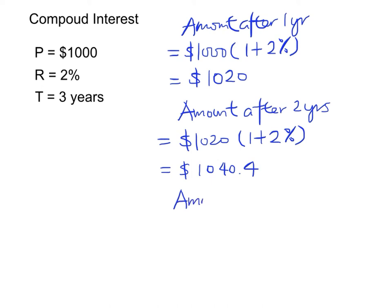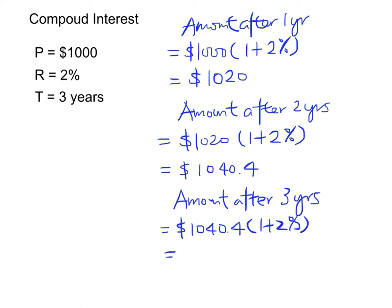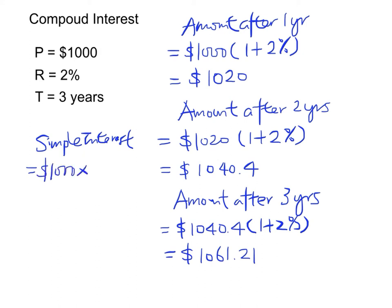Therefore, we can find the amount after three years. This will be $1,040.40 times (1 plus 2%) again, which gives $1,061.21. For compound interest, we have an interest of $61.21, which is a bit more than the simple interest method. We can compare this using the simple interest formula — the simple interest is $1.21 less than the compound interest.